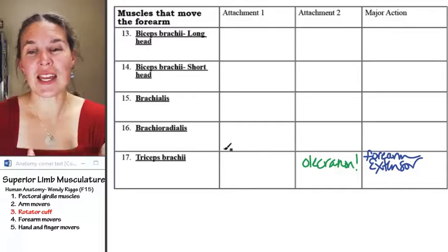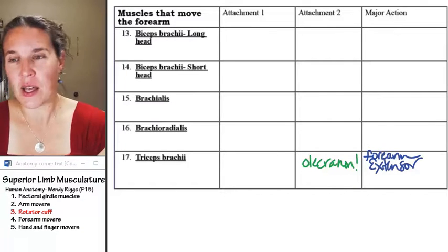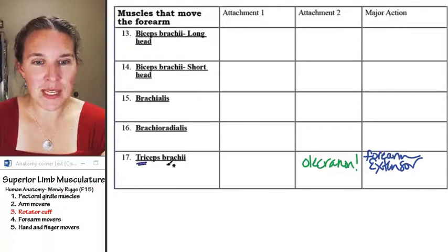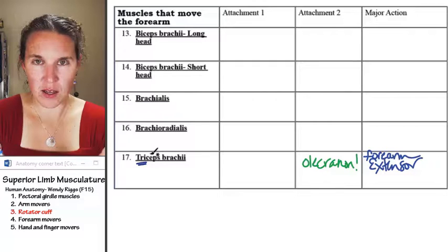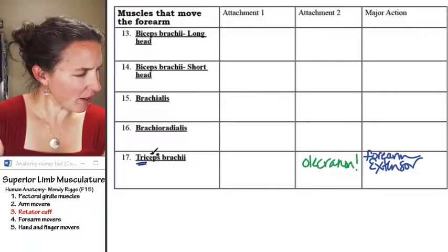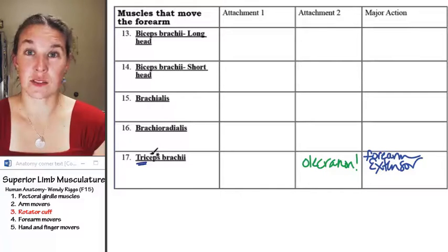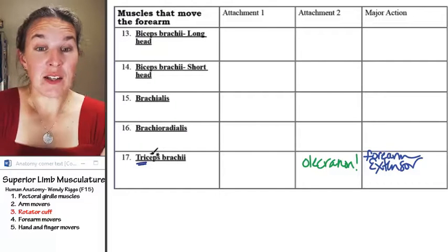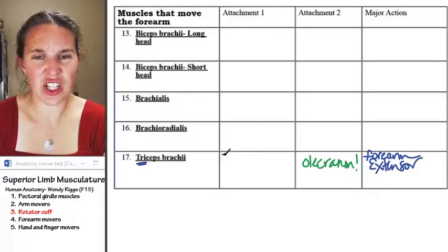So triceps brachii, all of them attached to the olecranon. Now, two of the heads, triceps means there are three heads. You have a long head, a short head, and a lateral head. They're not even long lateral medial or any of that. And the lateral head and the medial head attach to the humerus. So they attach to the shaft of the humerus.